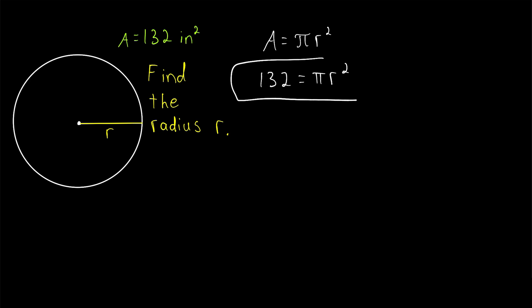To get to the answer, we just have to solve this equation for R. Again, we'll begin by dividing both sides by π. That will give us 132 over π on the left is equal to R squared on the right.